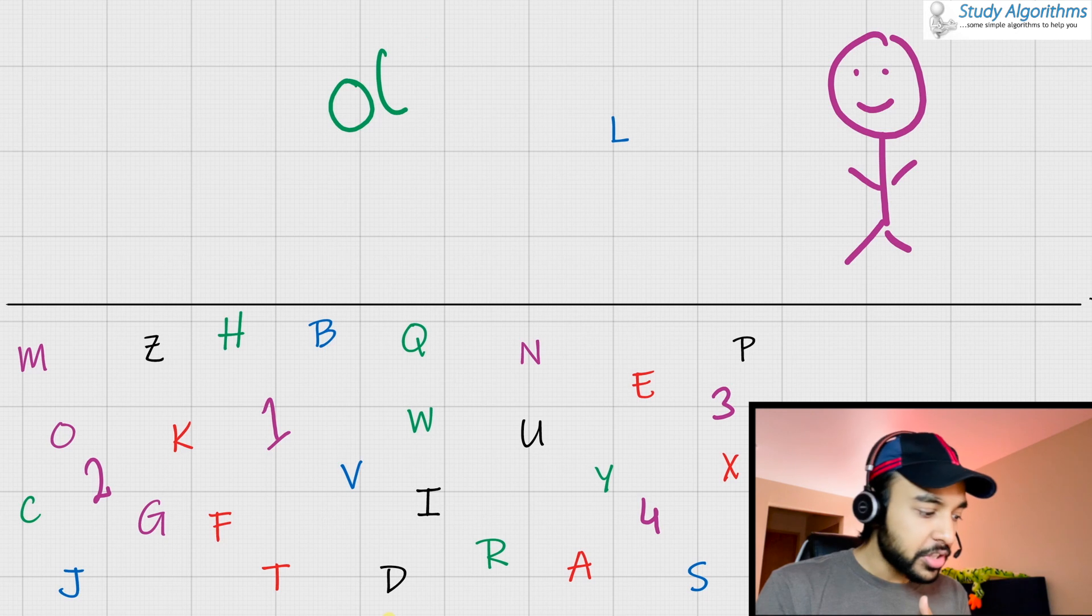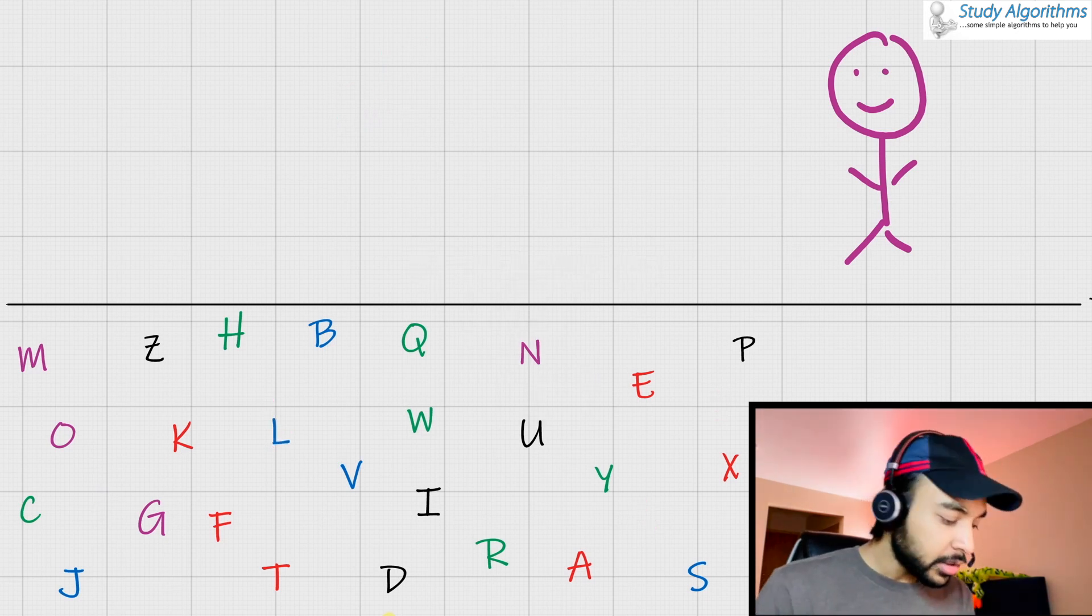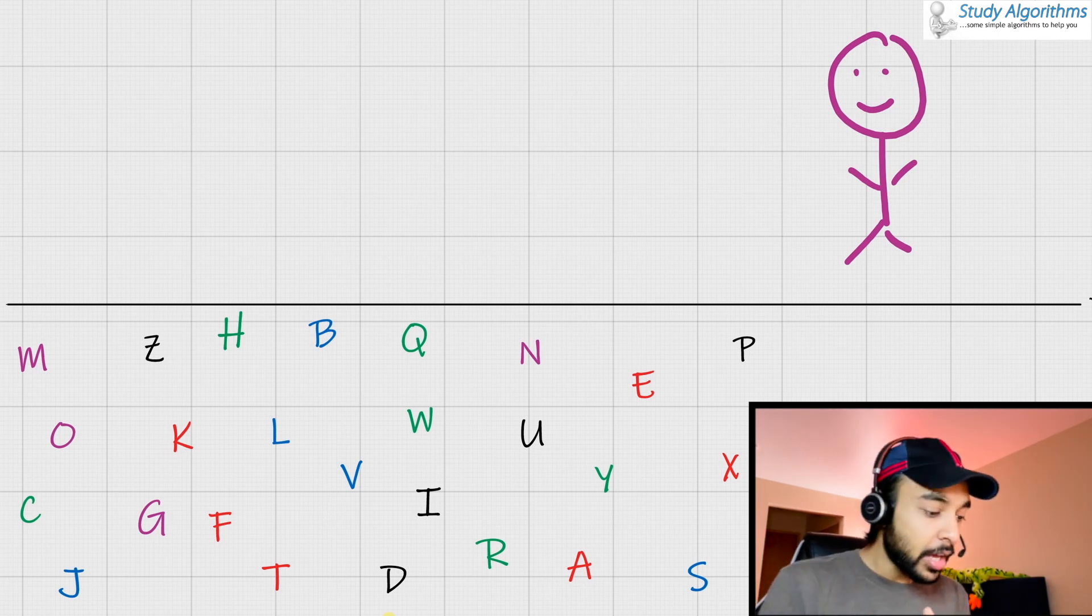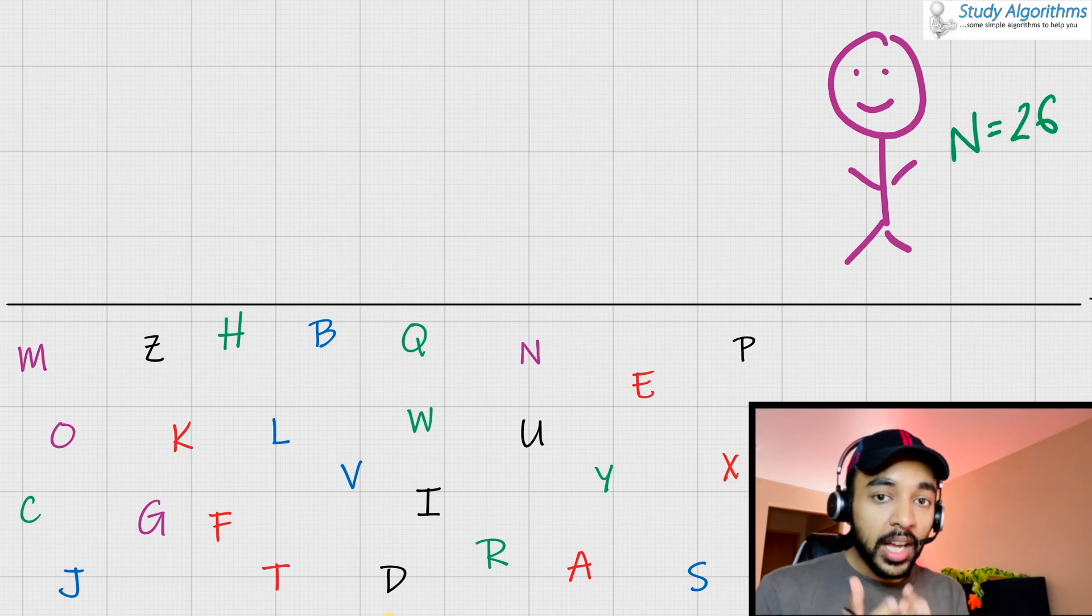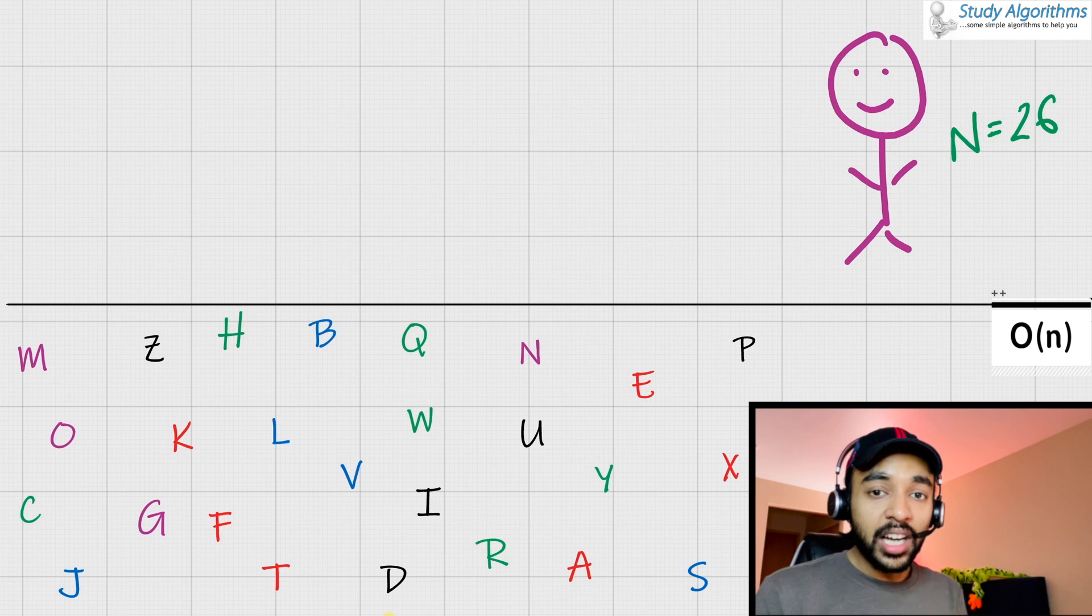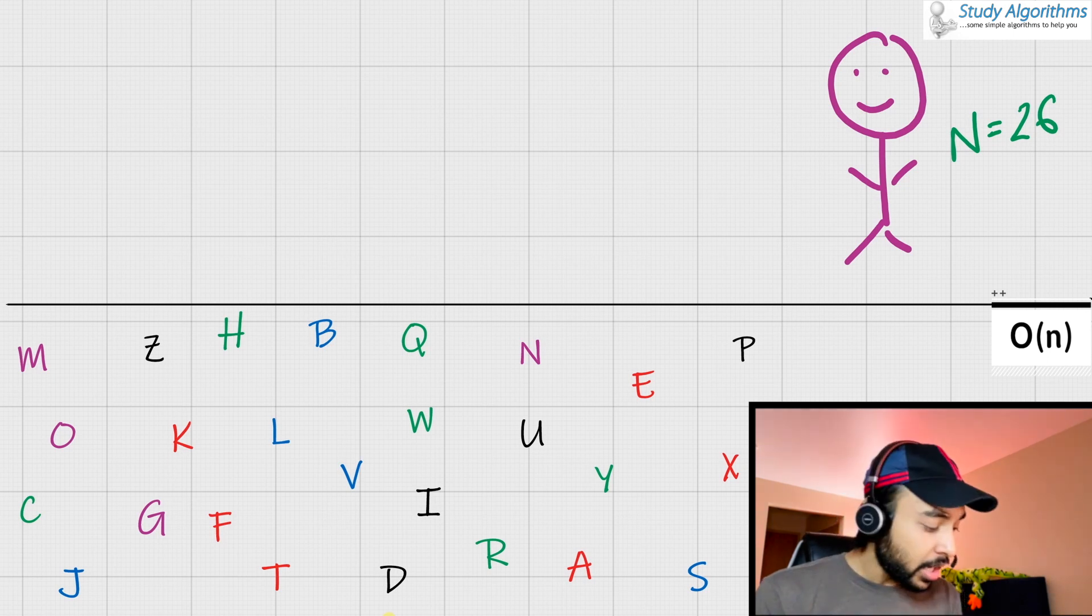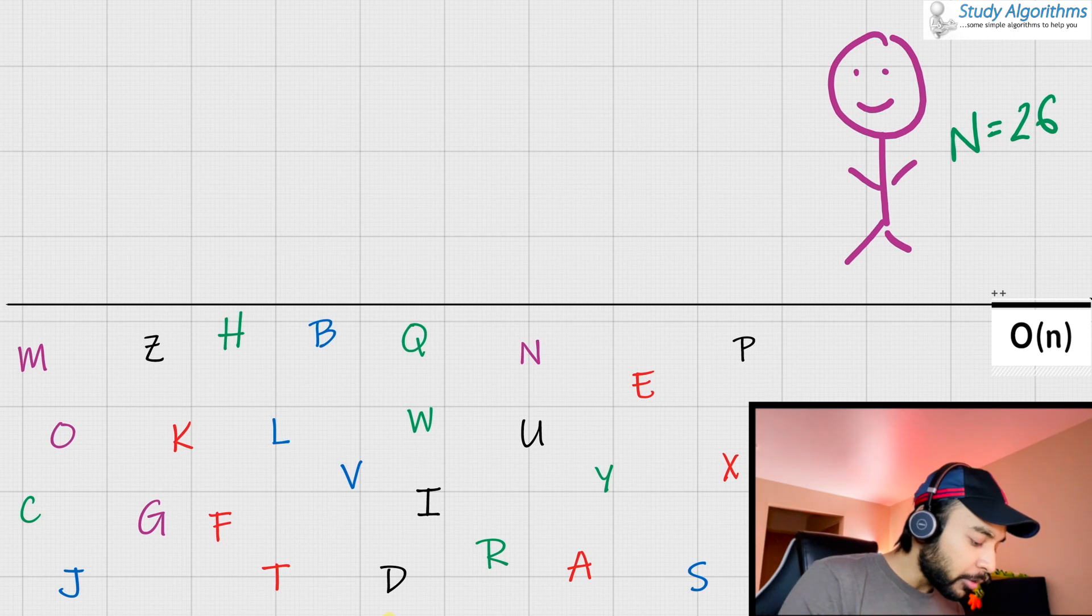Let us now go back to our original case. So once again, you have 26 characters on the floor or I can say that the value of n equals to 26. Now I ask you for a specific character. Now let us say I ask you that bring me the letter W. So we are talking about the worst case. Remember in a worst case, what would happen is you would start looking from the beginning. You would see, oh, this is not W, this is not W, this is not W, this is no, no, no, no.